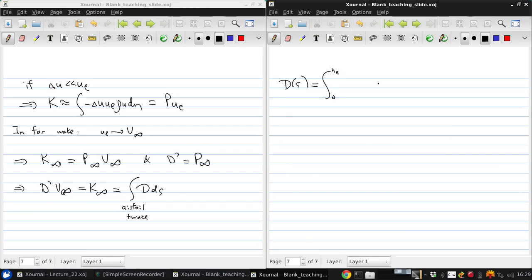which, I'll just write the definition again, and the local contributions to this are always positive. Right? D of S is always greater than zero because mu plus mu T is always positive, and du dn squared is always positive.